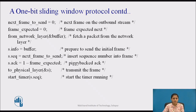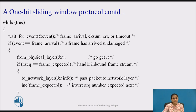The sender starts a timer with the sequence number. The machine then waits for an event. The event can be frame arrival, checksum error, or timeout. If the event is frame arrival, meaning the frame has arrived from the other machine, we accept it from the physical layer. If R.sequence_number equals frame_expected — that is, the received frame is the expected frame — then that frame is sent to the network layer: to_network_layer(R.info).